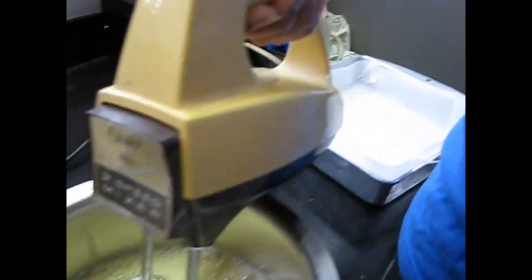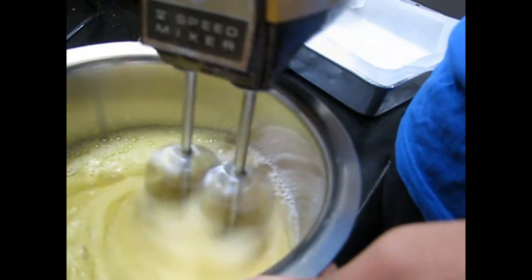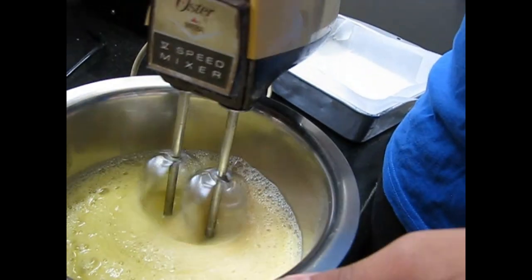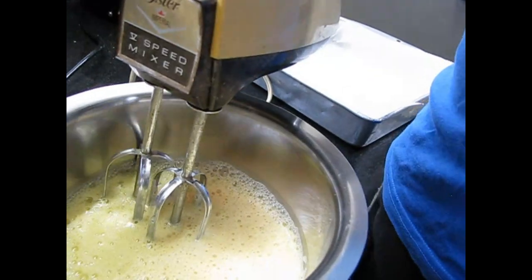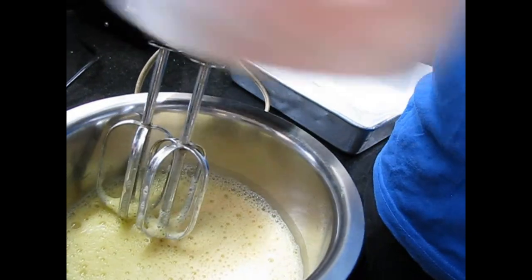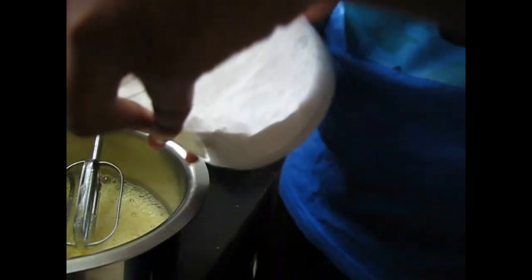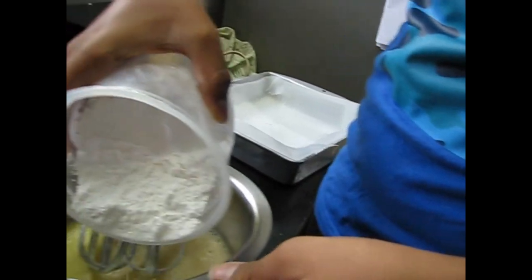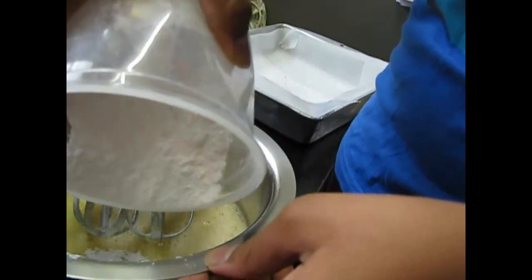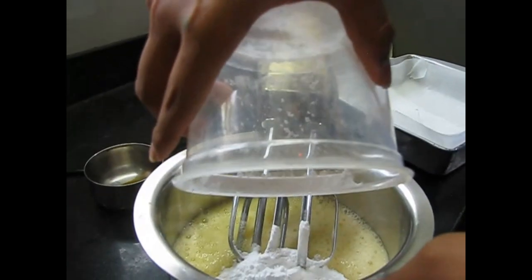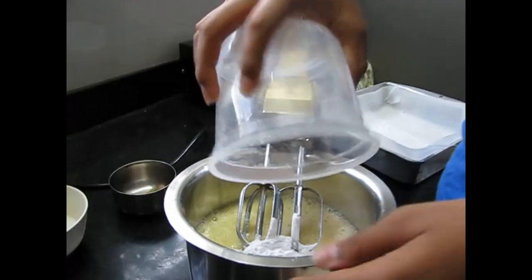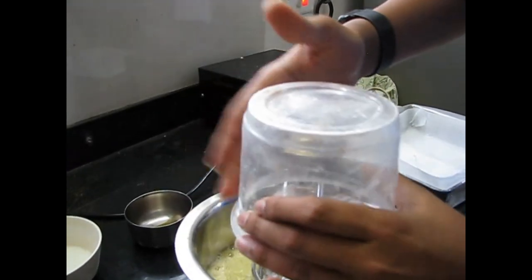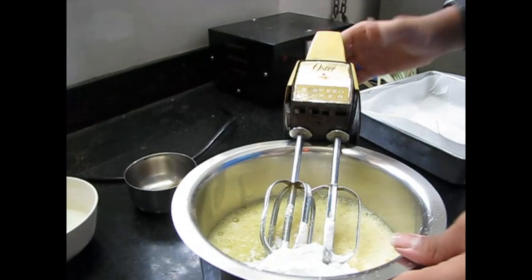Just whisk that in. This milk we will add at the last which we have over here. Now we'll add the sugar, powdered sugar. Just keep this down and add this in.